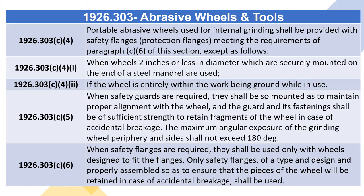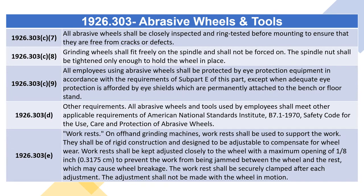1926.303(c)(5): When safety guards are required, they shall be so mounted as to maintain proper alignment with the wheel, and the guard and its fastenings shall be of sufficient strength to retain fragments of the wheel in case of accidental breakage. The maximum angular exposure of the grinding wheel periphery and sides shall not exceed 180 degrees. 1926.303(c)(6): When safety flanges are required, they shall be used only with wheels designed to fit the flanges, and shall be of a type and design to ensure that pieces of the wheel will be retained in case of accidental breakage.